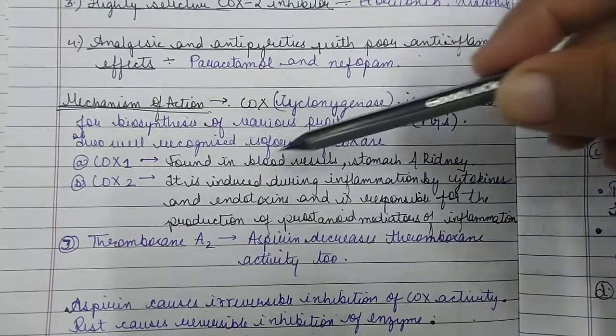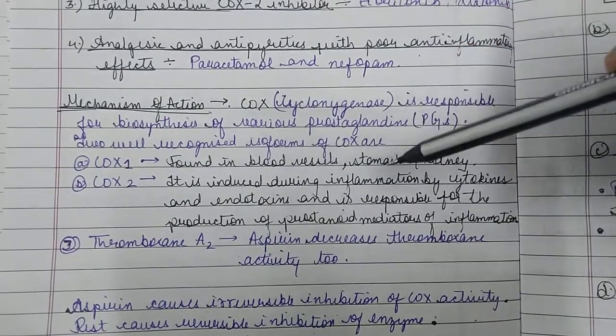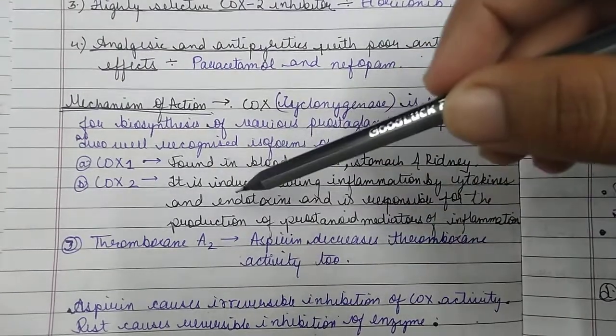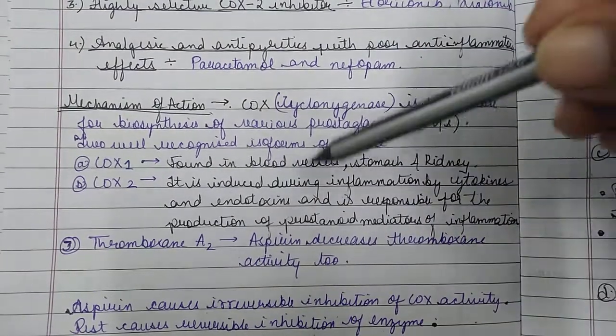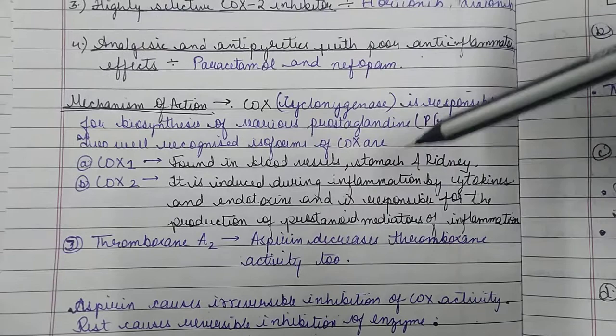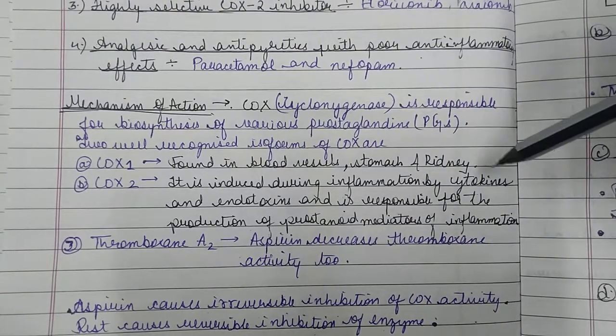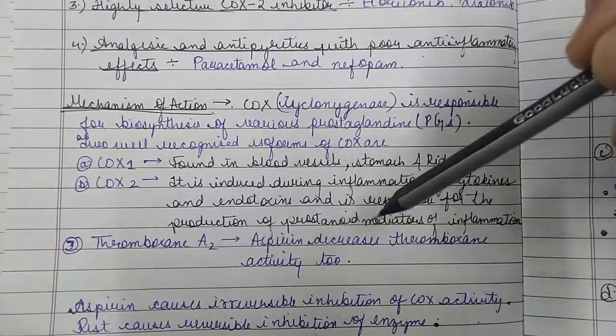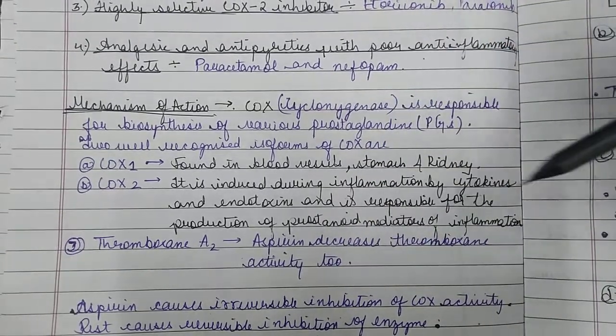COX-1 is formed in blood vessels, stomach, and kidneys. COX-2 is an induced form. It is induced during inflammatory reactions, which are brought about by cytokines and endotoxins, and is responsible for the production of prostanoid mediators of inflammation.